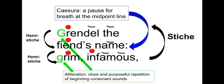In addition, there's alliteration — the close and purposeful repetition of beginning consonant sounds. You can see that 'Grendel' and 'grim' both begin with G. Alliteration helps the scop remember what they are saying and helps listeners follow along. Importantly, in this type of poetry the alliteration always falls on the stressed syllables — not on unstressed words like 'the' or 'name.' So to recap: stich, hemistich, caesura, and alliteration are all terms you need to know.